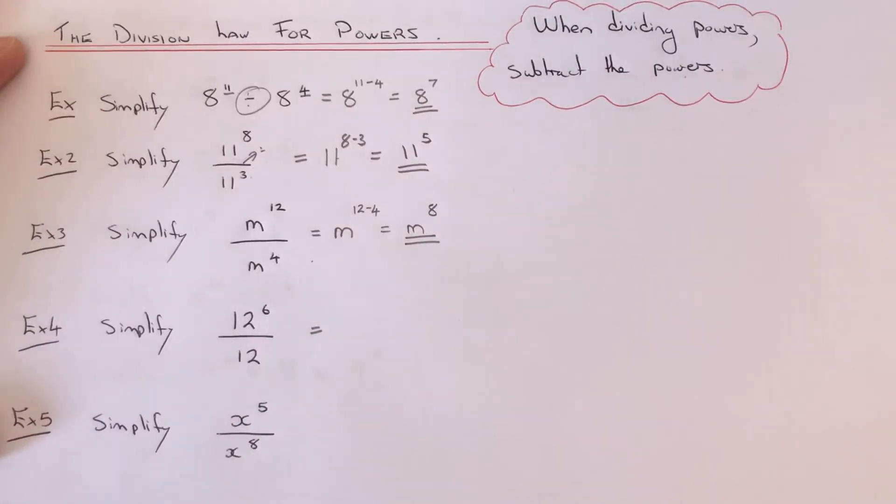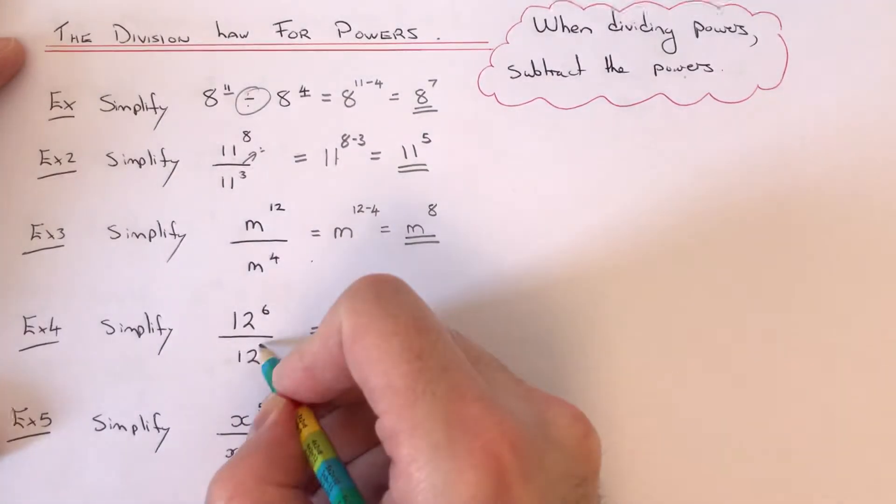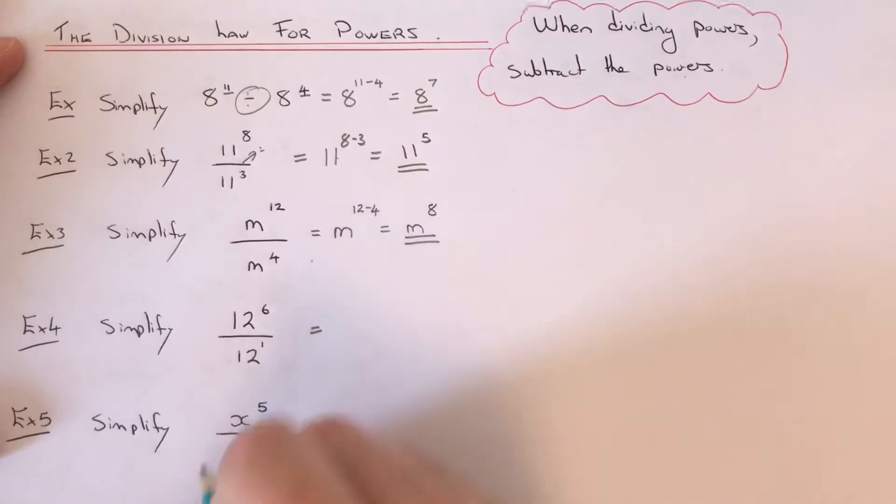Let's have a look at example 4. This time we've got to simplify 12 to the power of 6 divided by 12. Now the power on the 12 here is 1, okay?